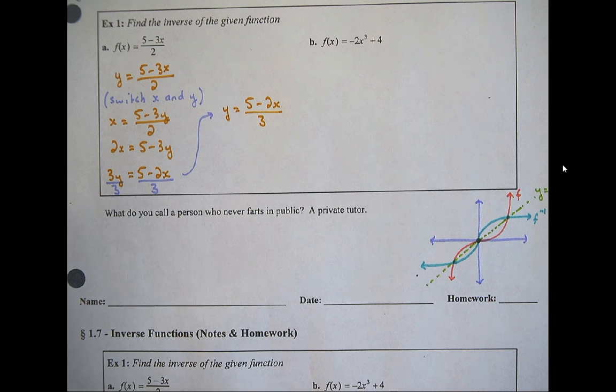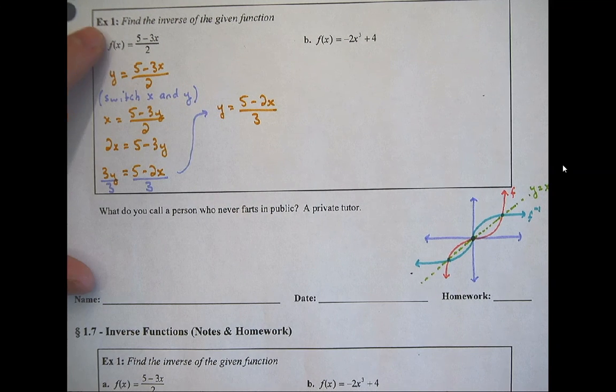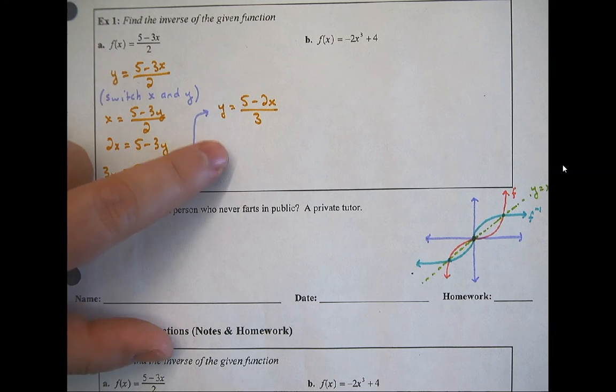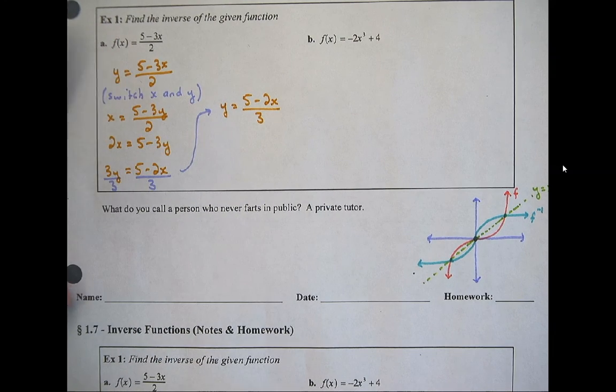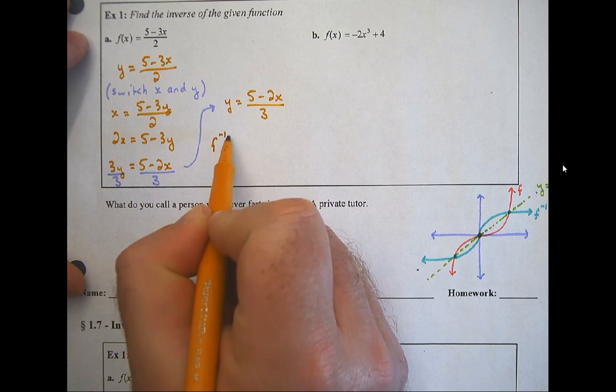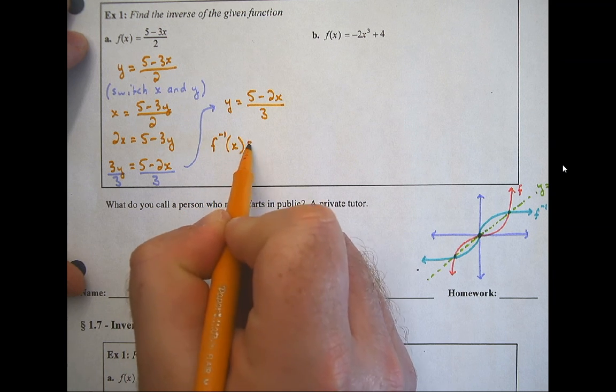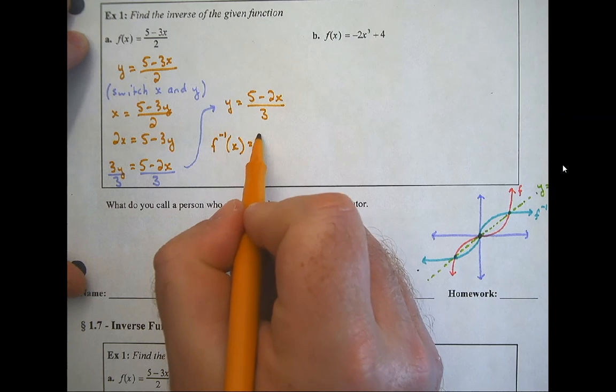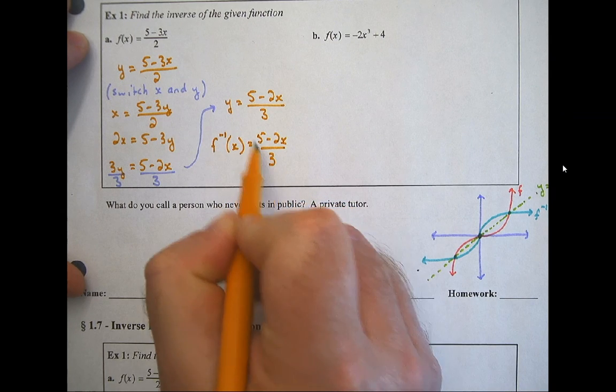But keep in mind, we shouldn't call this y because this was called f. So we want to talk about this as being the inverse of this function. And our notation for f – the inverse of f is f to the negative 1 of x is equal to 5 minus 2x over 3.